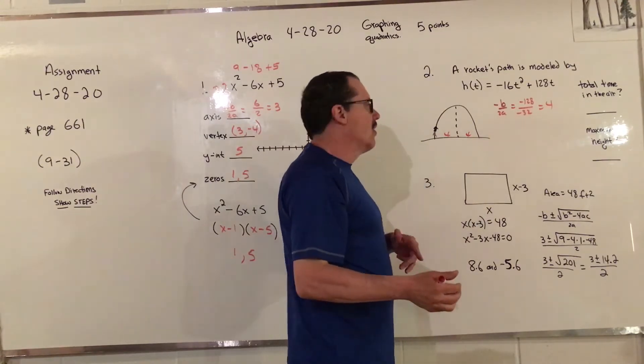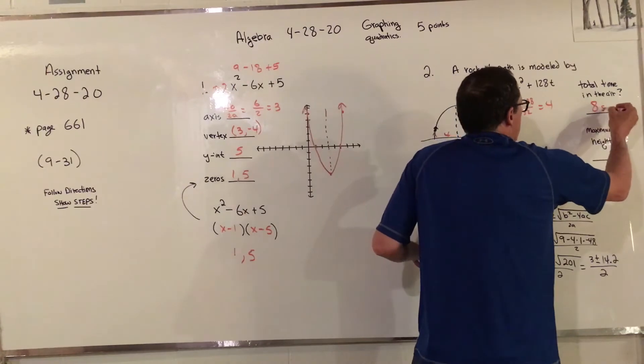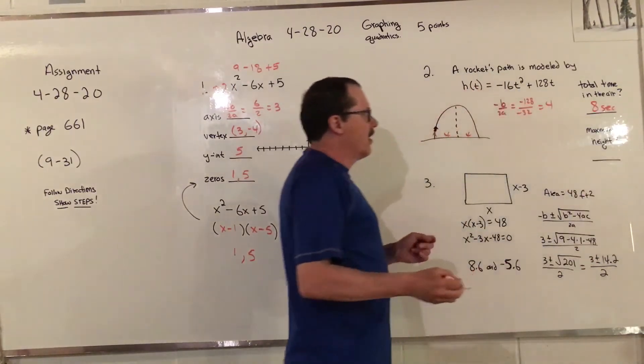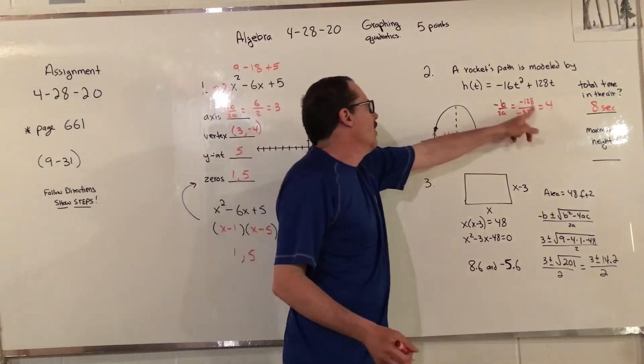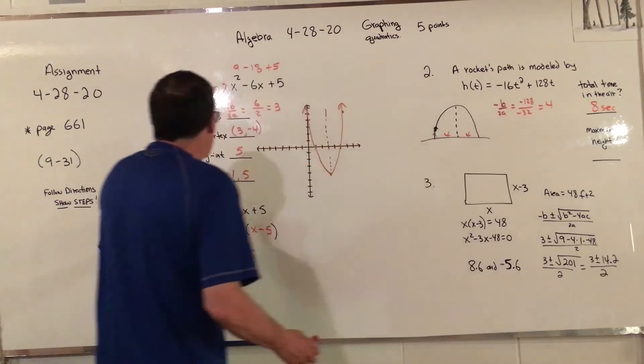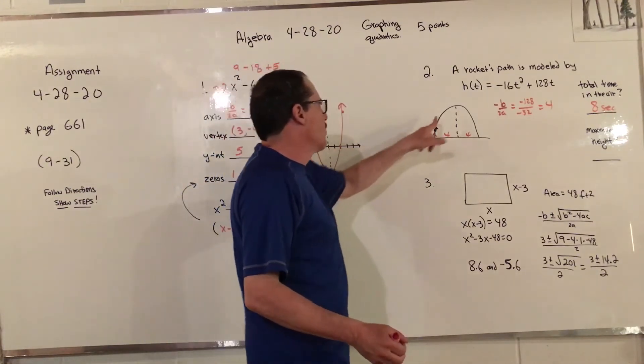It takes 4 seconds to reach the maximum height, which means it's going to take another 4 seconds to hit down. So the total time that's going to be in the air is 8 seconds. To find the maximum height, you just take what you got here for 4 and plug it in.